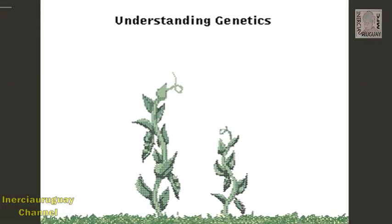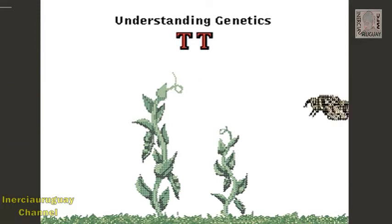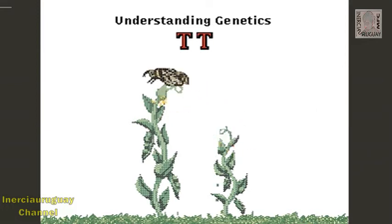By looking at the underlying genetics, we can understand what Mendel observed. Information about traits is carried on genes. We can represent the gene for height with the letter T. Each plant has two, one from each parent.